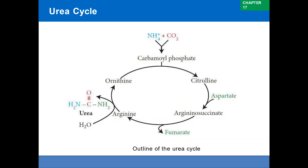Ammonium ions formed during amino acid breakdown have two fates. Some are used in the biosynthesis of nitrogen-containing compounds. The excess ammonium ion is detoxified in the liver to form urea and then excreted. Hence, urea is considered to be the end product of amino acid metabolism. Urea is synthesized in the liver through a series of reactions known as the urea cycle.